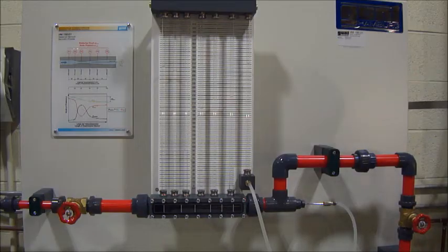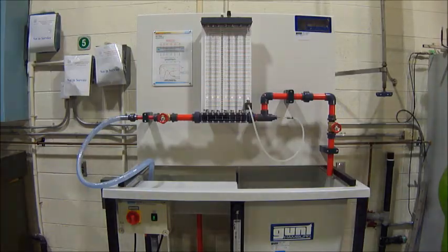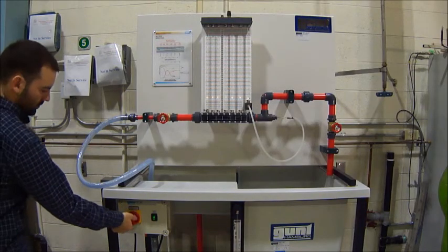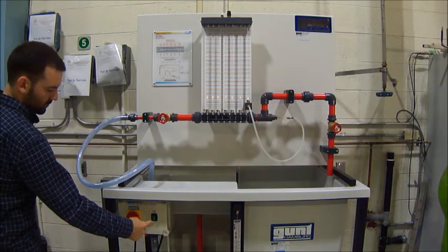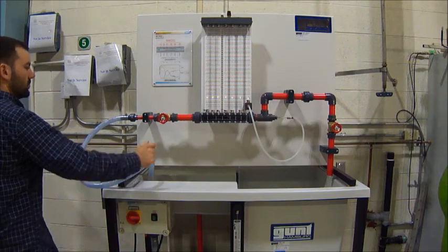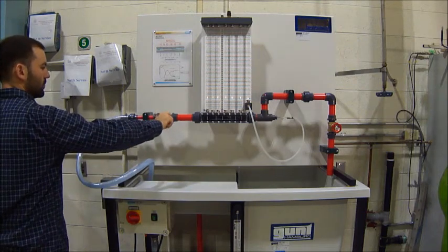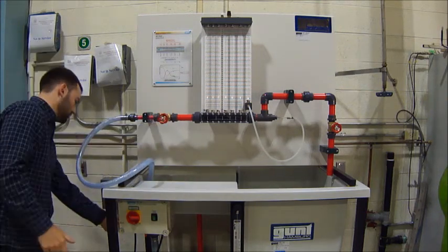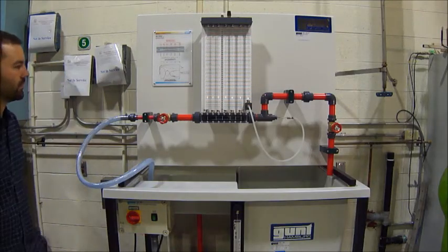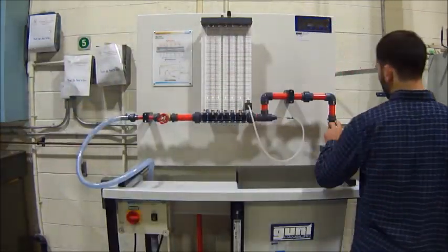This completes the Bernoulli experiment but the following steps are required to shut off the apparatus. First turn off the pump. Then turn off the switch. Close the inlet valve. Close the gate valve. And open the outlet valve.